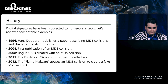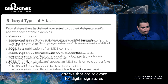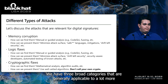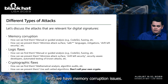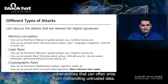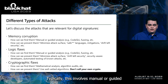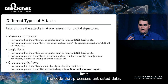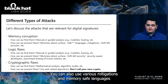So let's discuss the attacks relevant to digital signatures at a high level. We have three broad categories. First, we have memory corruption issues — your classic out-of-bounds read and write vulnerabilities or overflow vulnerabilities that can arise from mishandling untrusted data. How do we find them? Typically this involves manual or guided analysis, as well as fuzzing. How do we fix them? One good way is to minimize your attack surface and limit the code that processes untrusted data. You can also use various mitigations and memory-safe languages to substantially reduce your risk.